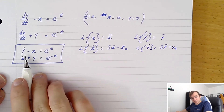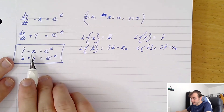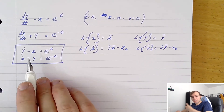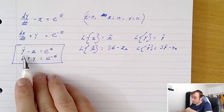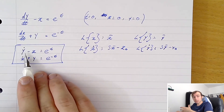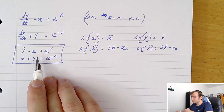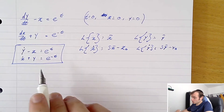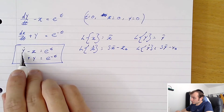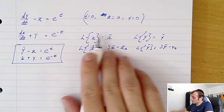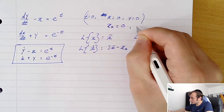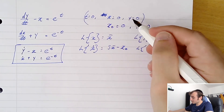Taking the Laplace transform of both sides and using the principle of linearity, the Laplace transform of y-dot minus x is the same as the Laplace transform of y-dot minus the Laplace transform of x, and the same applies to the second equation. Since our initial conditions give x-naught equals zero and y-naught equals zero, we can go straight into our substitutions.